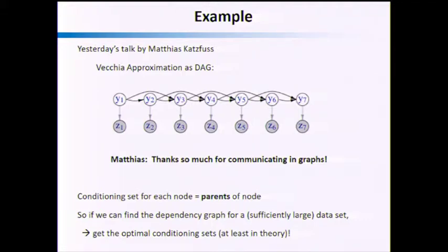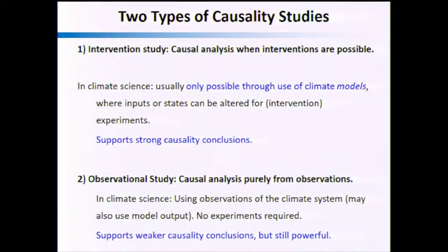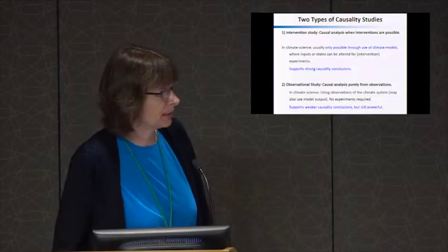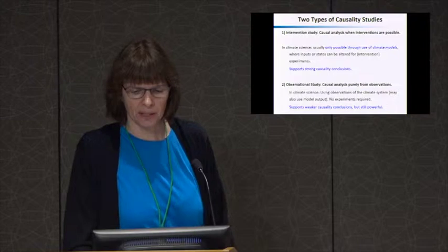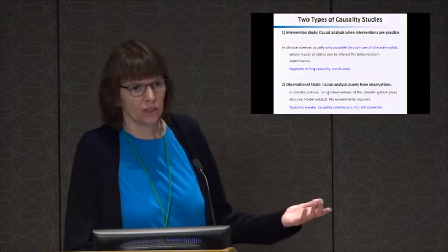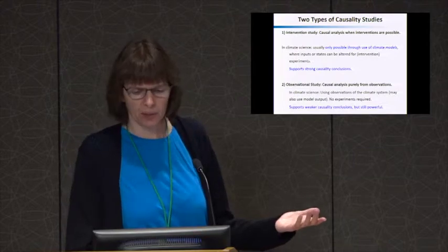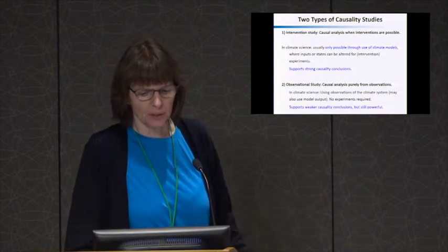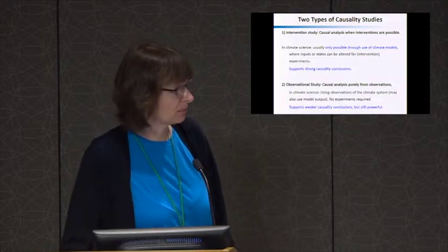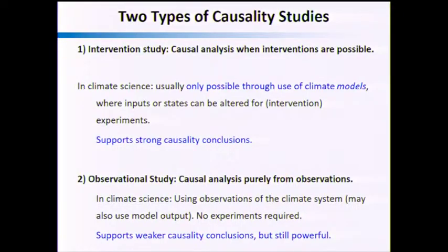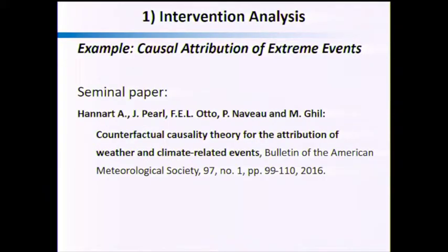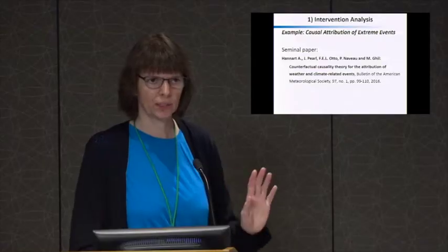There are two types of causality studies. First, intervention studies, where causal analysis involves interventions. In geoscience you can usually only do that if you have simulations — you can edit the inputs or states in your system, and that is the strongest tool, supporting very strong causality conclusions. Second, if you only have observations and cannot do any interventions, you only have weaker causality conclusions, but they're still very powerful.